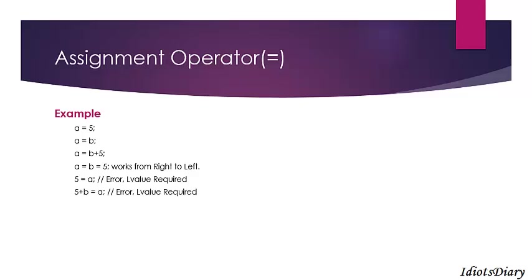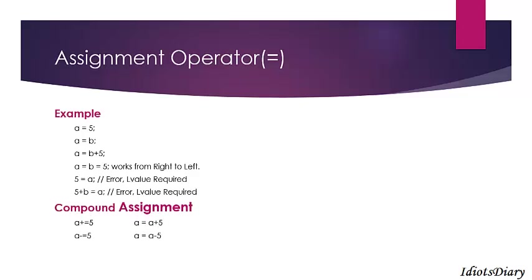On the left-hand side of the assignment operator, there should be a variable, and only a single variable is allowed in C. The assignment operator can be combined with other operators and is known as compound assignment. For example, a = a + 5 can be written as a += 5. Similarly, a = a - 5 as a -= 5, a = a * 5 as a *= 5, a = a / 5 as a /= 5, and a = a % 5 as a %= 5. These are also known as shorthand assignments.